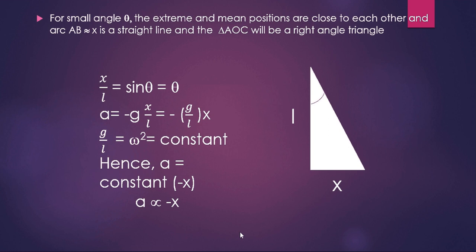Since g/L is a constant equal to ω², we get a = −ω²x, meaning acceleration is directly proportional to −x. This is the relationship between acceleration and displacement, showing that the motion of the simple pendulum is simple harmonic motion, because acceleration and displacement are directly related to each other.